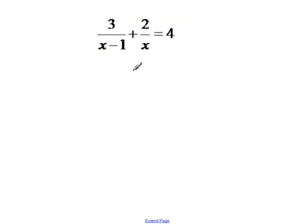Now this one, we still have restrictions again because we have variables in the denominator. For this one, x can't equal 0. And for this one, 1 would make that 0, so it also can't equal 1.